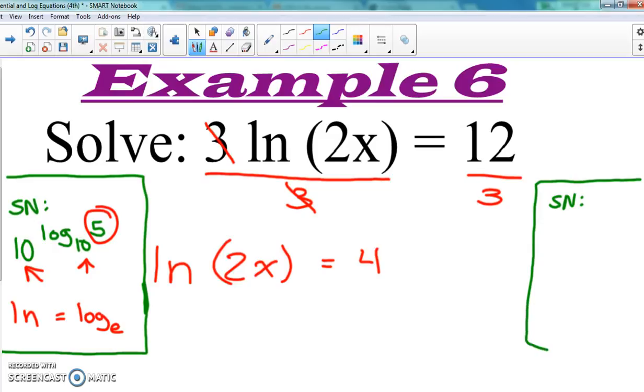When you have e to the natural log of x, the natural log and e cancel each other out, so you're left with just x as an answer. We also looked at natural log of e to the x - and again, natural log and e cancel each other out, leaving just x. We're pulling all of that back into play here because it's all important for what we're going to do.